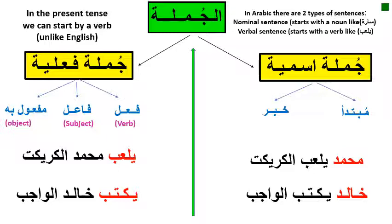الجملة الإسمية: محمد يلعب الكريكت — Muhammad plays cricket. خالد يكتب الواجب — Khalid writes the homework. الجملة الإسمية has two parts: مبتدأ وخبر. But today we will focus on الجملة الفعلية — the verbal sentence, which starts with a verb like يلعب.